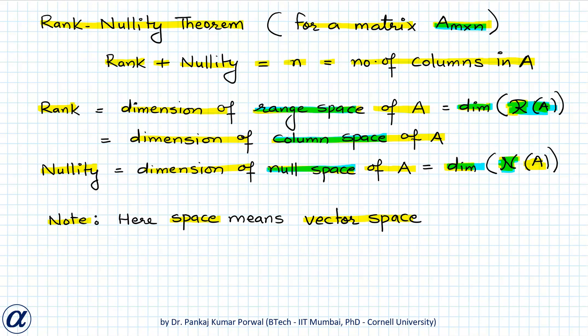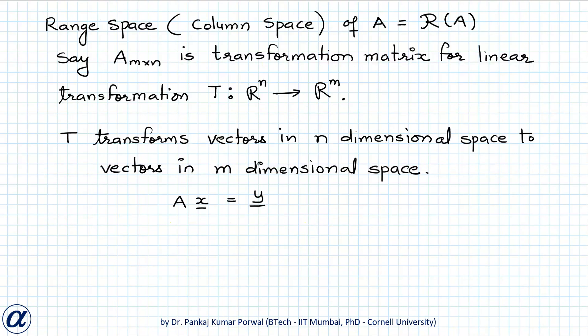If you want to know in more detail exactly how we find dimensions of vector spaces, you can watch my video on that topic — the link is given in the pop-up card above. Now let's understand what we mean by these different spaces in the rank-nullity theorem. First, we move to the range space, which is the same as the column space of matrix A.